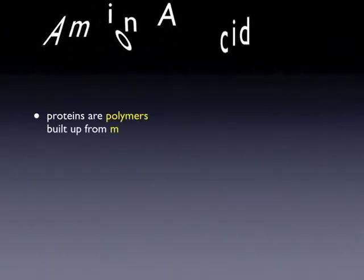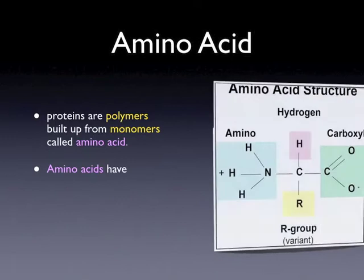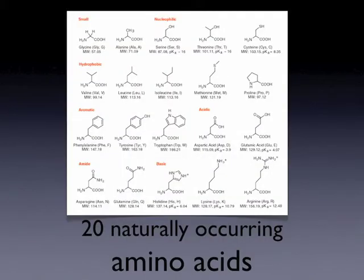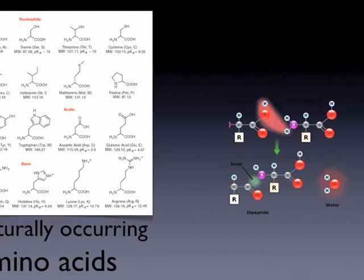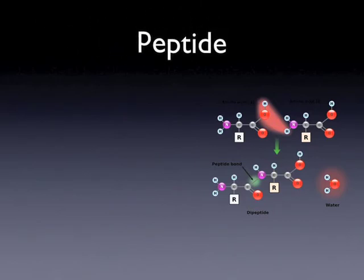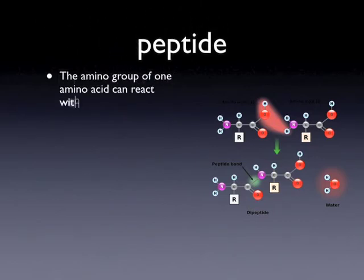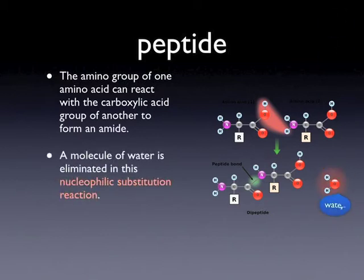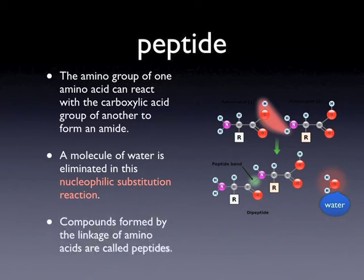Proteins and polymers build up from monomers called amino acids. Amino acids have two functional groups: the carboxylic group and the primary amine. There are 20 naturally occurring amino acids. The amino group of one amino acid can react with the carboxylic acid group of another to form an amide. A molecule of water is eliminated in this nucleophilic substitution reaction. Compounds formed by the linkage of amino acids are called peptides.